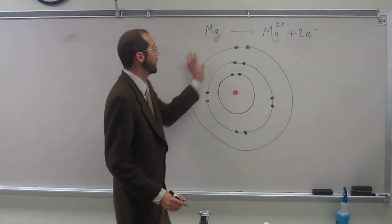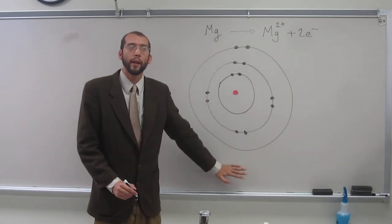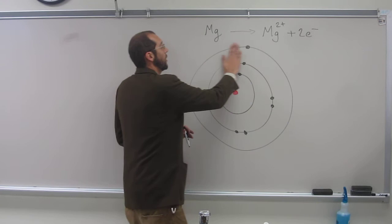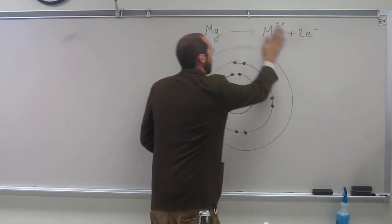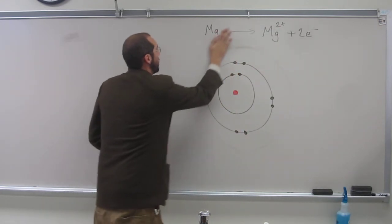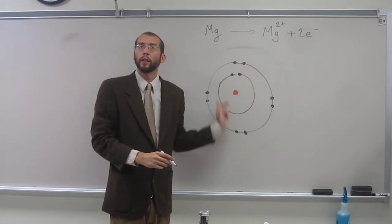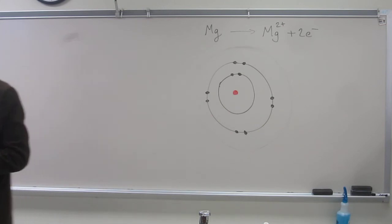So when we do that, this diagram is no longer accurate, right? So what do we have to show? Take off those two, but also, the whole valence shell. And in fact, we have a new valence shell. Is everybody okay with that idea?